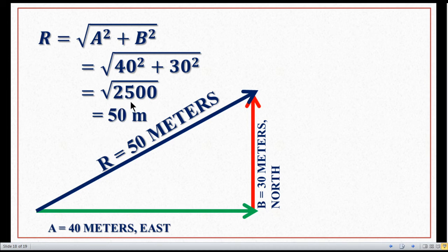By calculation: square root of 40 squared plus 30 squared equals square root of 2500 equals 50 meters. So we can find out graphically the same 50 meters. This is the resultant vector.